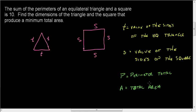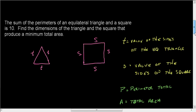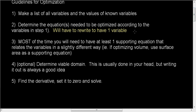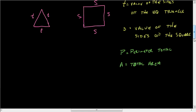Step two: determine the equation or equations that need to be optimized according to those variables. Well I need my total area. My total area is given by A equals the area of the equilateral triangle, which is one half the base, which is T, times the height.